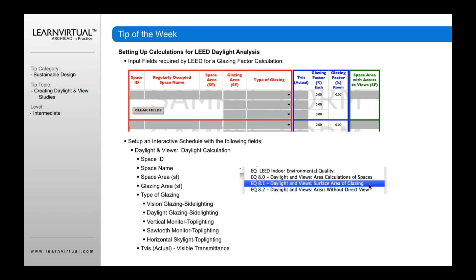You can also use this to create schedules for daylight analysis. You can create a daylight schedule for daylight and views, area calculations of spaces, surface areas of glazing, or areas without direct view. The kind of information you can pull from this daylight view analysis includes space ID, space name, space area square footage, glazing area square footage, type of glazing — these can be properties added in — as well as TBIS and other information.